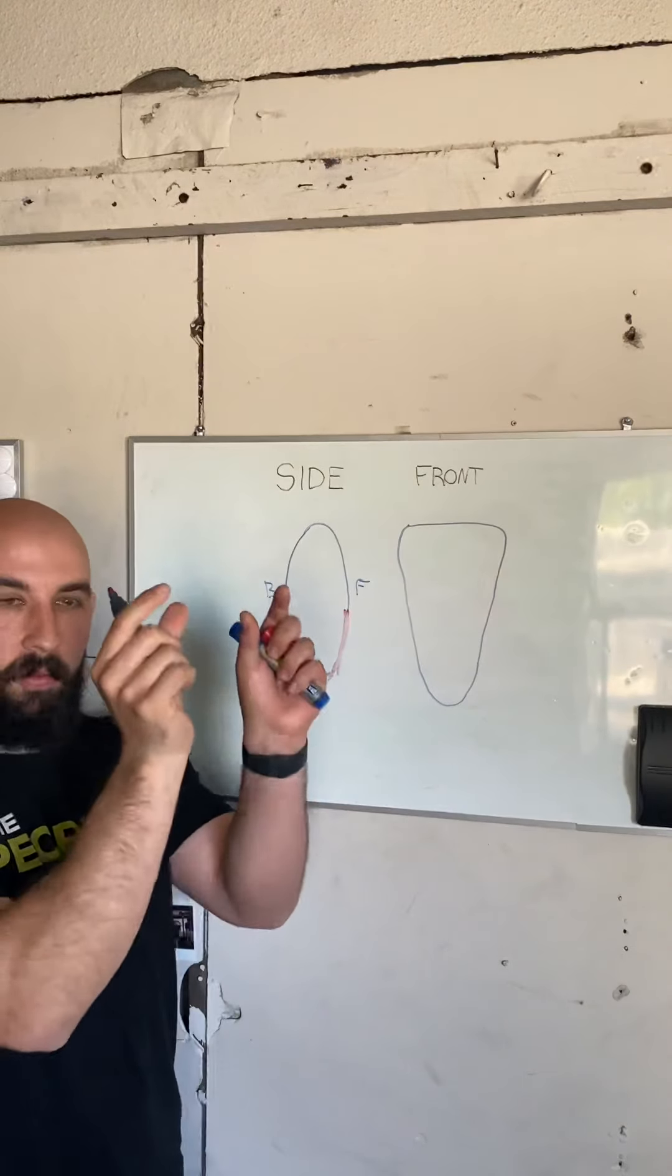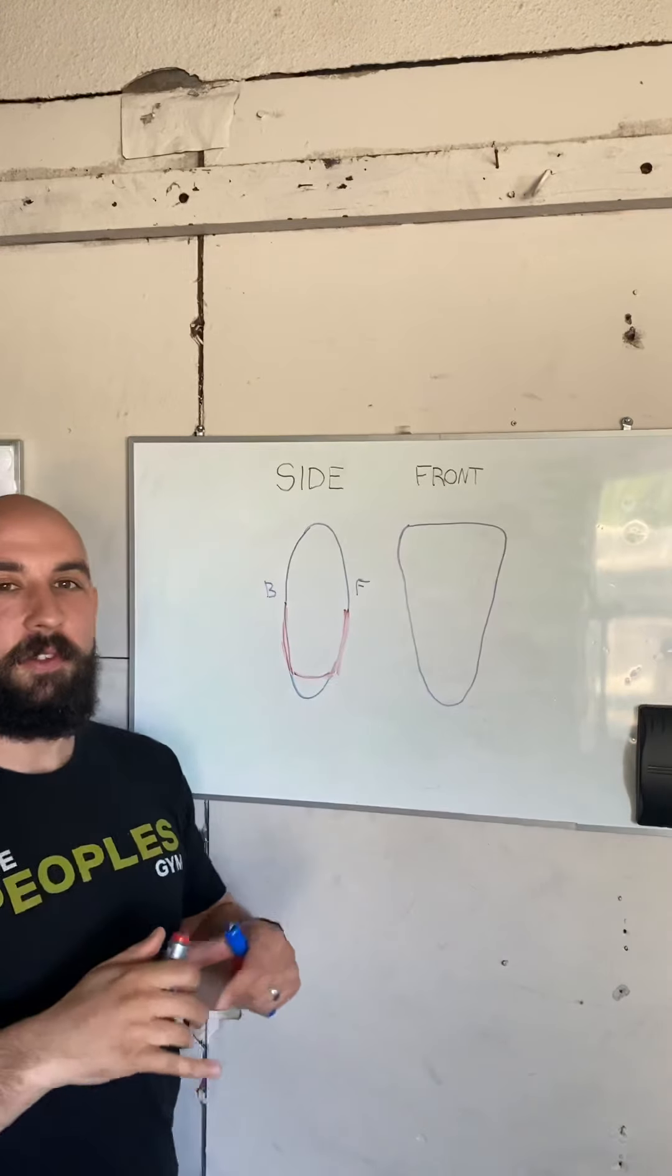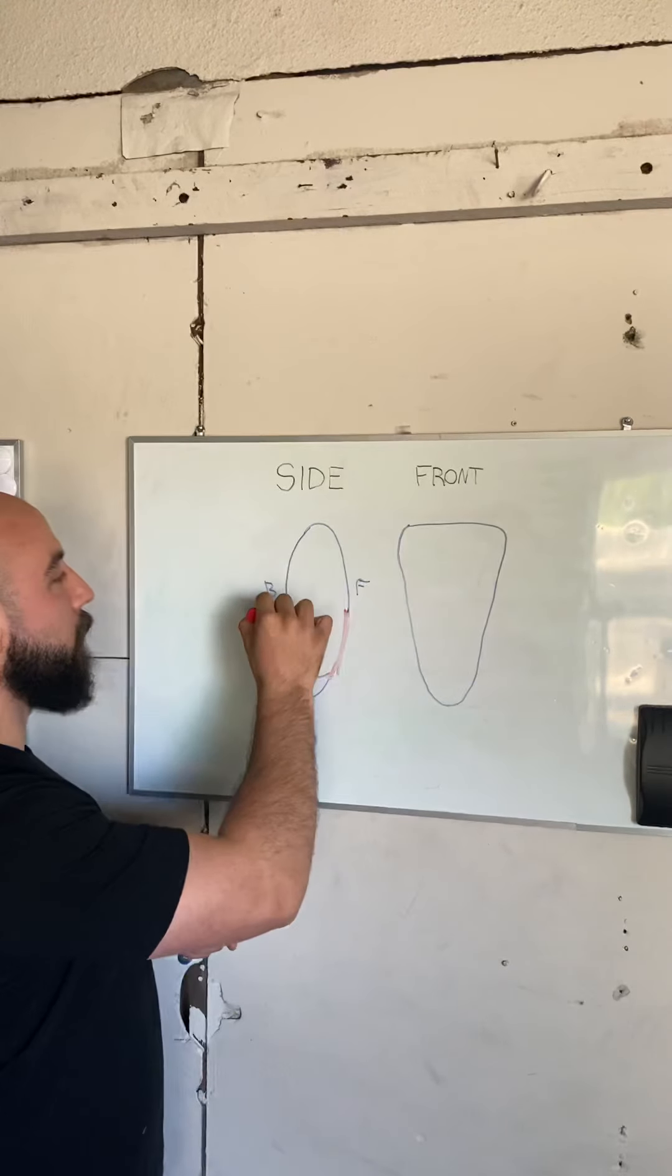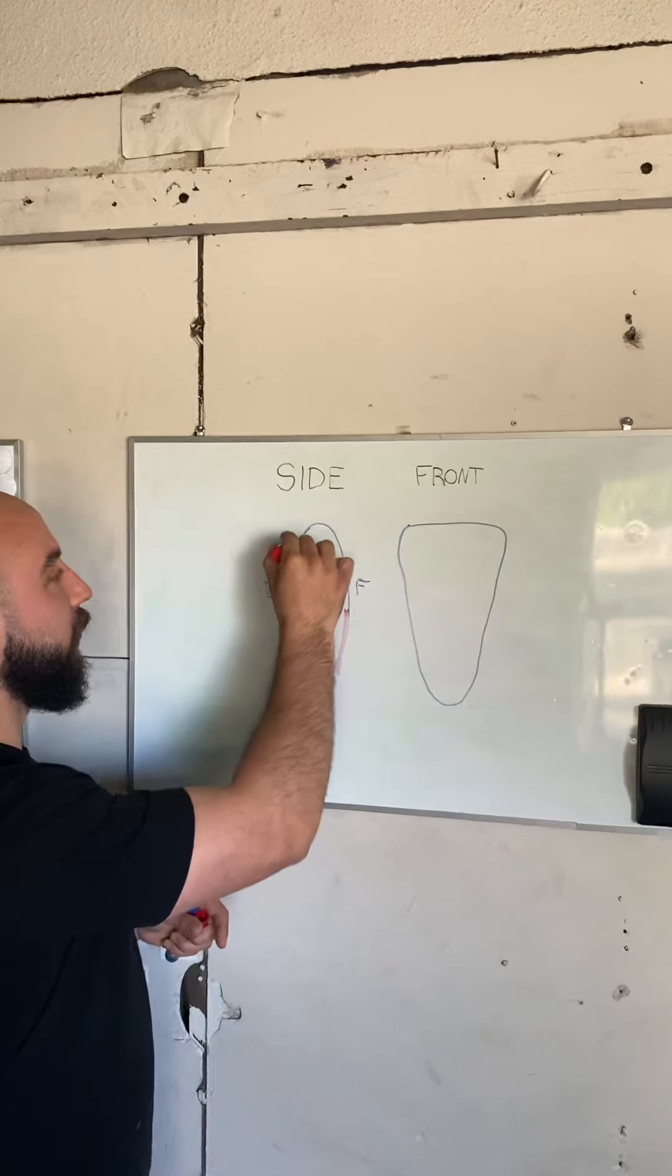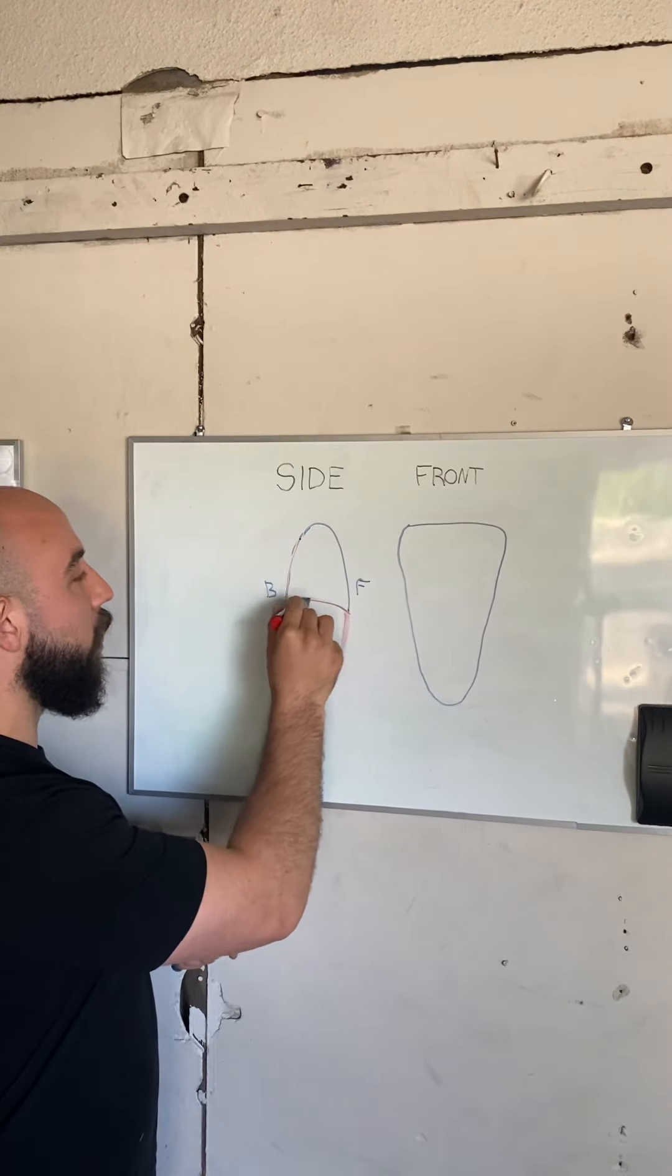On the back here we've got our spinal erectors. There's two big iron rods that run up the side of the back. If you see Olympic weightlifters or powerlifters, they've often got these big muscles that run all the way up here, your multifidus and other muscles like that. And then across the top here we've got our diaphragm.